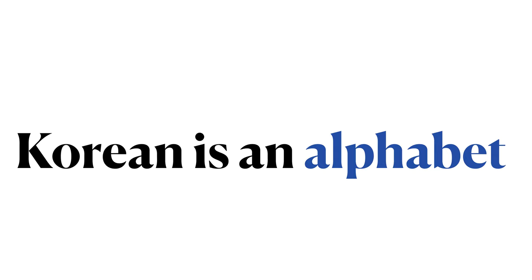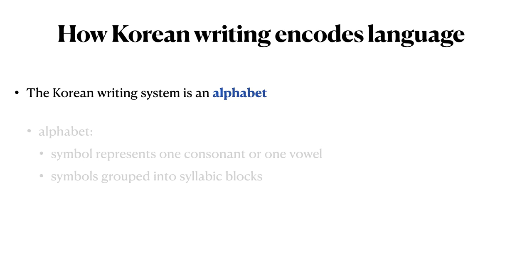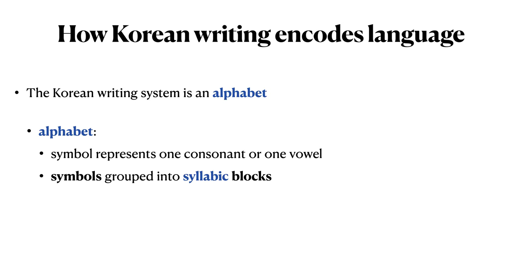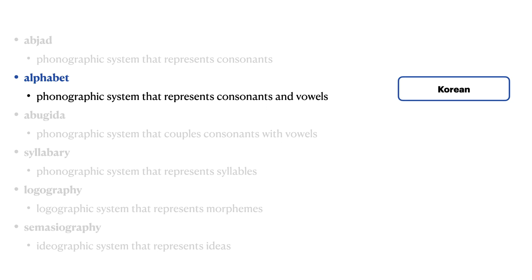Korean is an alphabet. The Korean writing system is indeed an alphabet, although it's one that's different from the alphabets that we may have previously seen. In an alphabet, each symbol represents either a consonant or a vowel. But unlike, say, the Greek, Latin, and Cyrillic alphabets, the symbols in the Korean writing system are grouped together when written into syllabic blocks. Korean is a phonographic writing system that represents consonants and vowels using explicit symbols for consonants and separate explicit symbols for vowels.